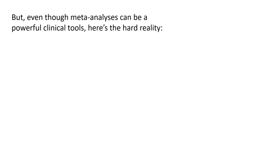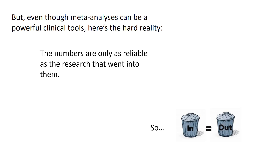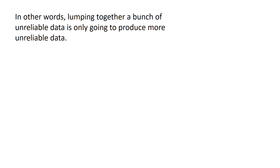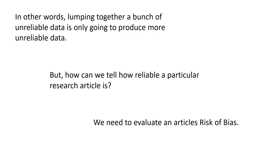But even though meta-analyses can be a powerful clinical tool, here's a hard reality: the numbers are only as reliable as the research that went into them. Basically, if you've got garbage coming in, garbage is going out. In other words, lumping together a bunch of unreliable data is only going to produce more unreliable data. But how can we tell how reliable a particular research article is? We need to evaluate an article's risk of bias. We'll talk about that next.